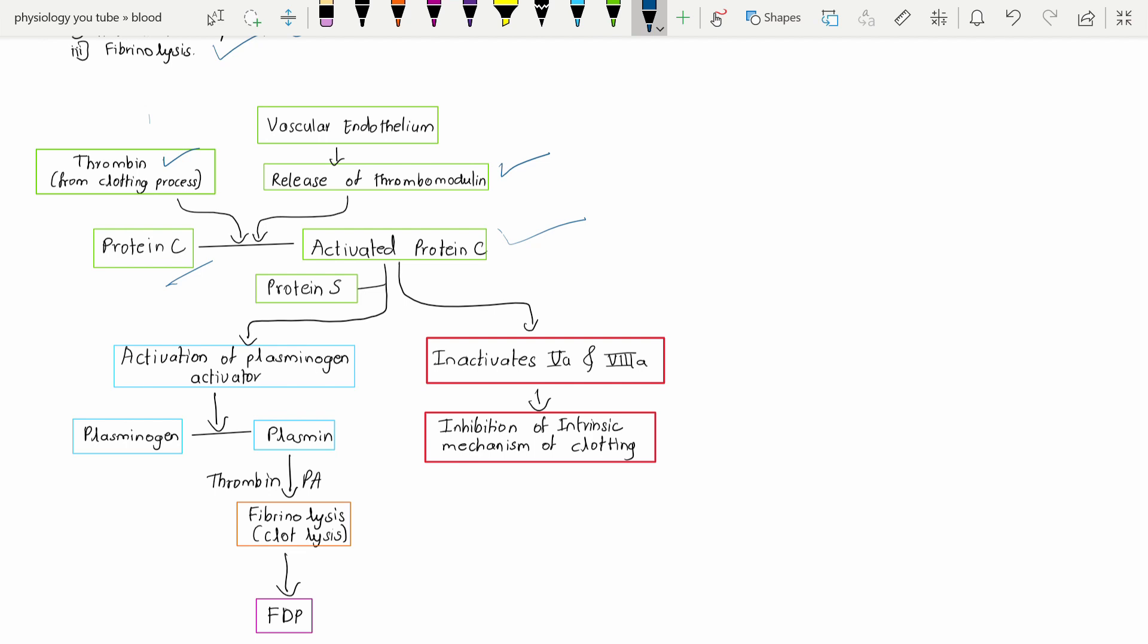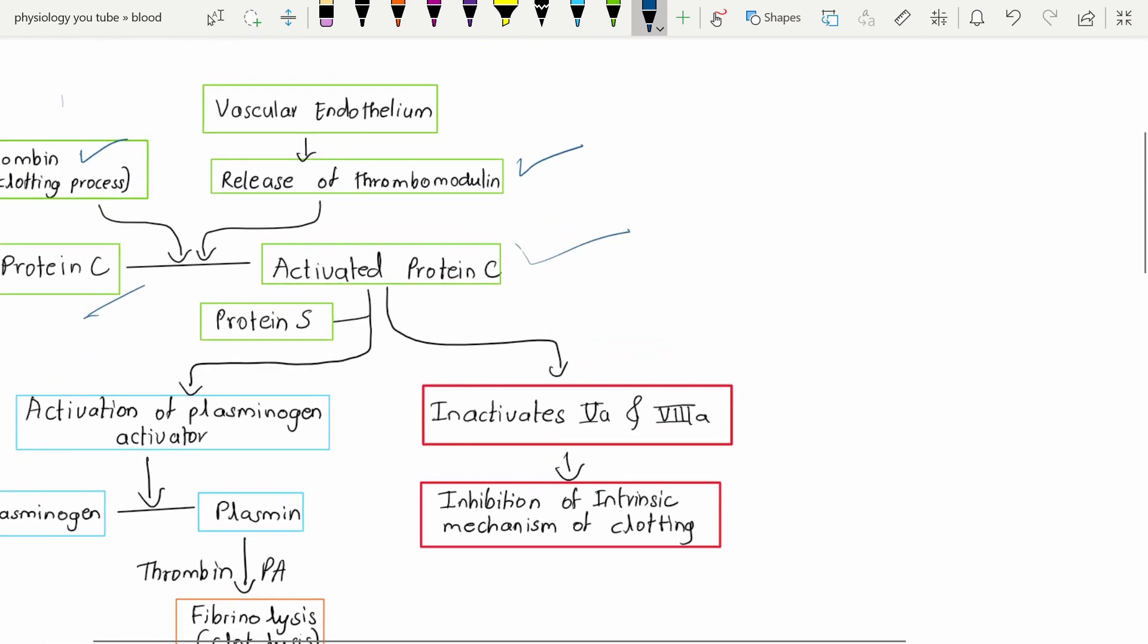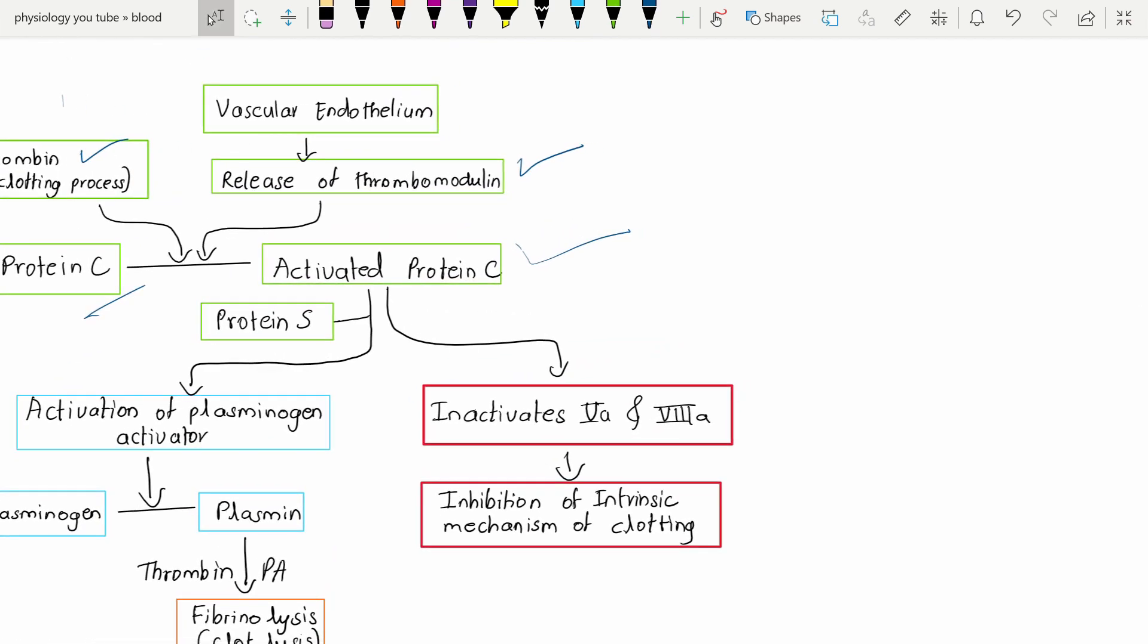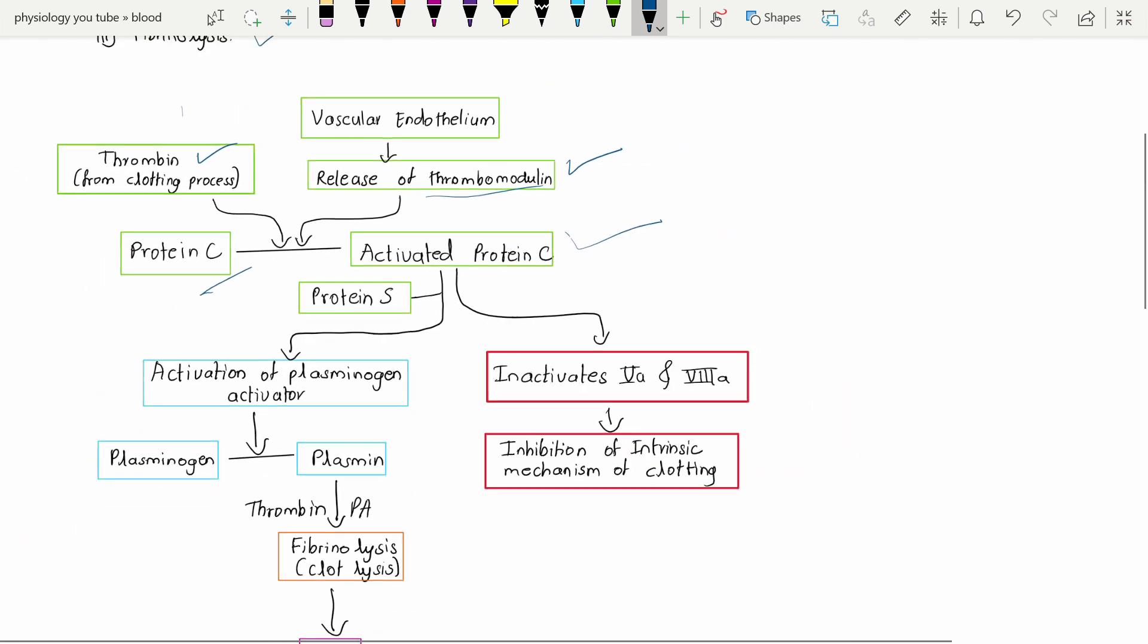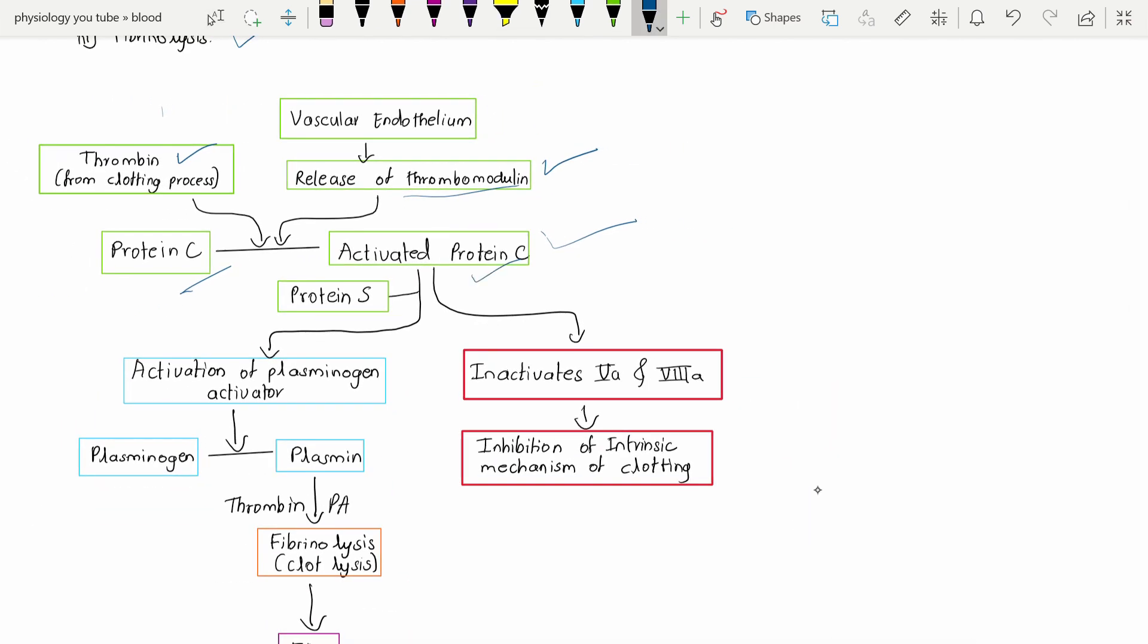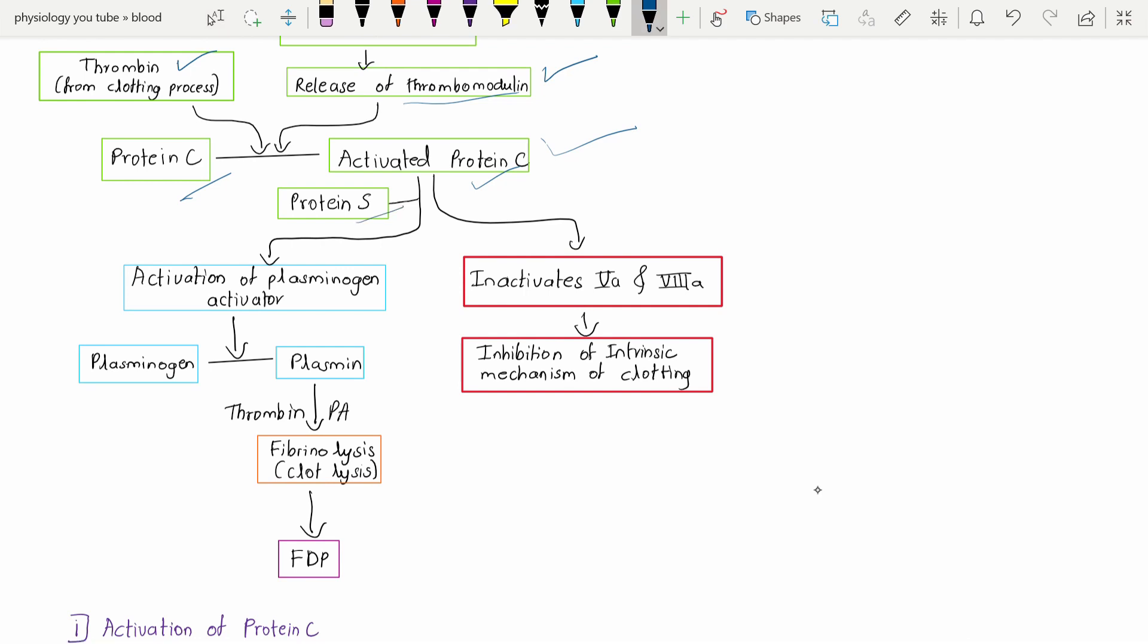What happens is that our endothelium knows these types of clots will be formed, so it releases the hormone called thrombomodulin. It also activates the protein C along with protein S as a cofactor.